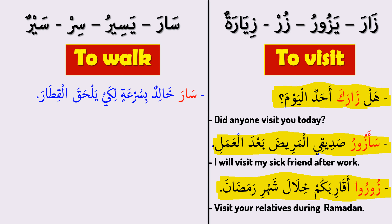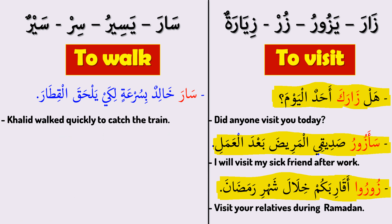Please look: سار خالد بسرعة لكي يلحق القطار. It means 'Khalid walked quickly to catch the train.' سار — he walked, خالد — Khalid, بسرعة — quickly, لكي — to, يلحق — catch, القطار — the train.